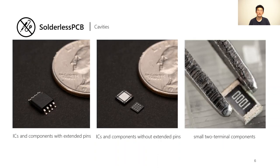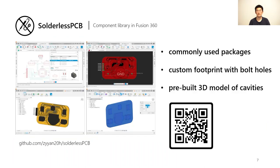We mainly just design custom housing cavities for each type of components and allocate bolt holes around their footprints. And to make this easily replicatable, we constructed a Fusion 360 electronic component library that we share on GitHub. This contains a small portion of some commonly used component packages with their modified footprint with bolt holes, as well as customized housing cavity 3D models pre-built in there.